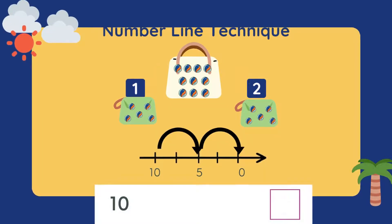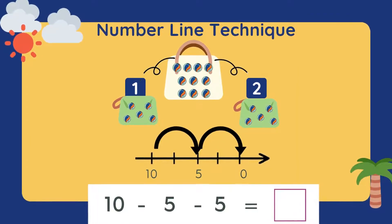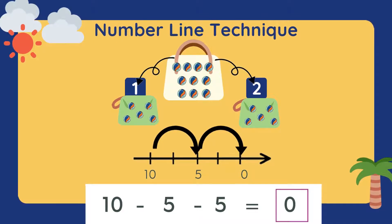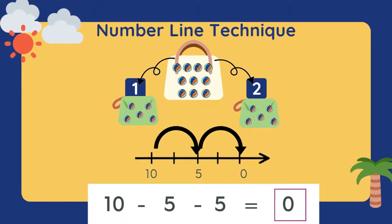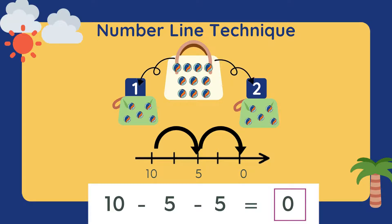Instead of using count back, we can also use the number line technique. We draw an arrow from number 10, we go to number 5. From number 5, we go to 0. So 10 minus 5 minus 5 is equal to 0.